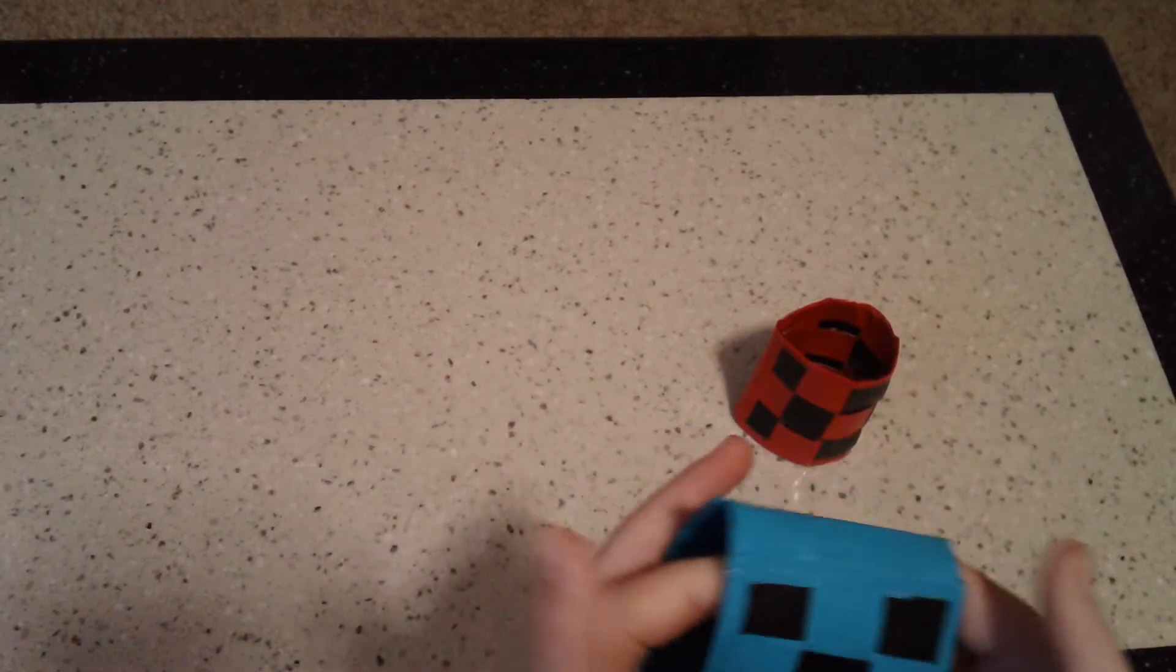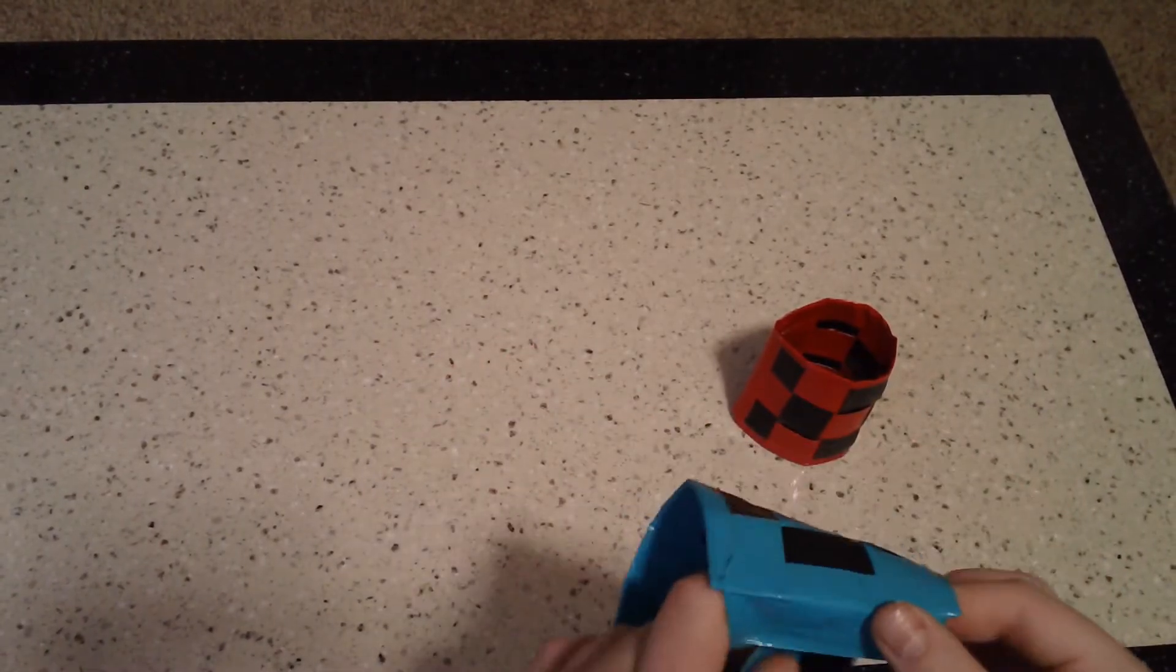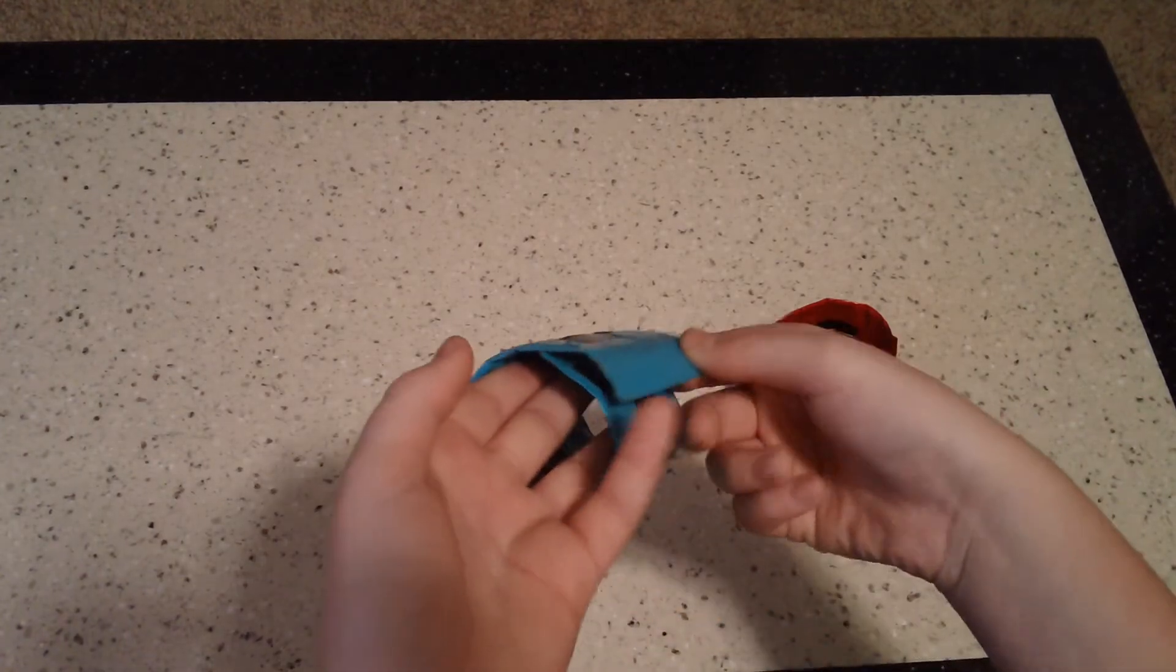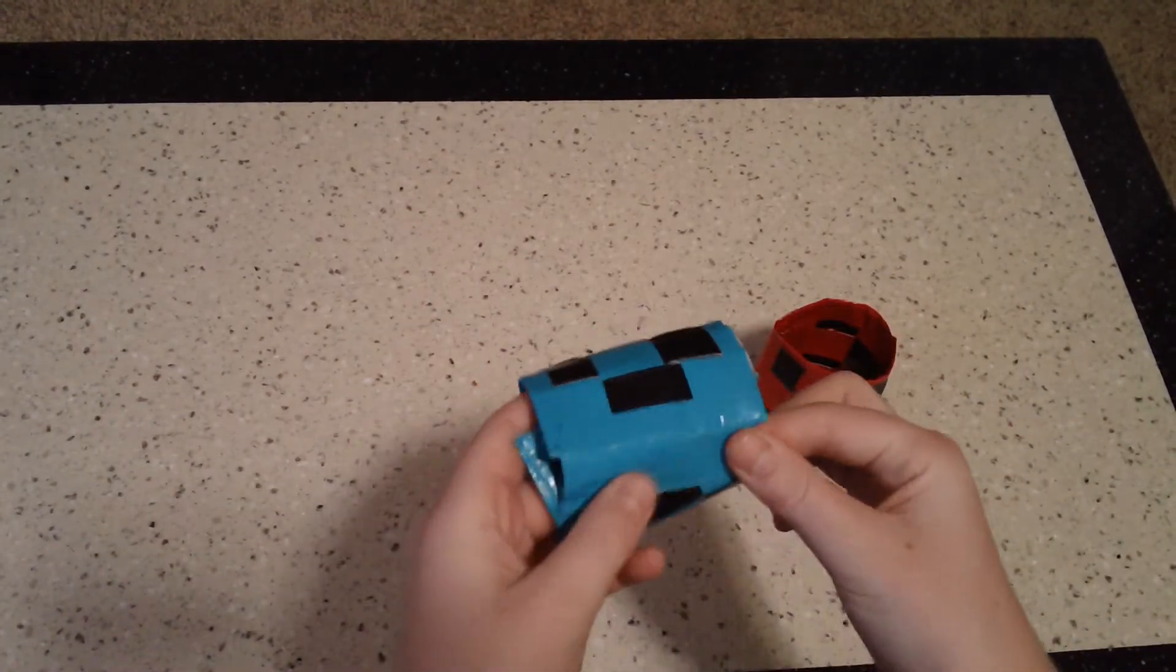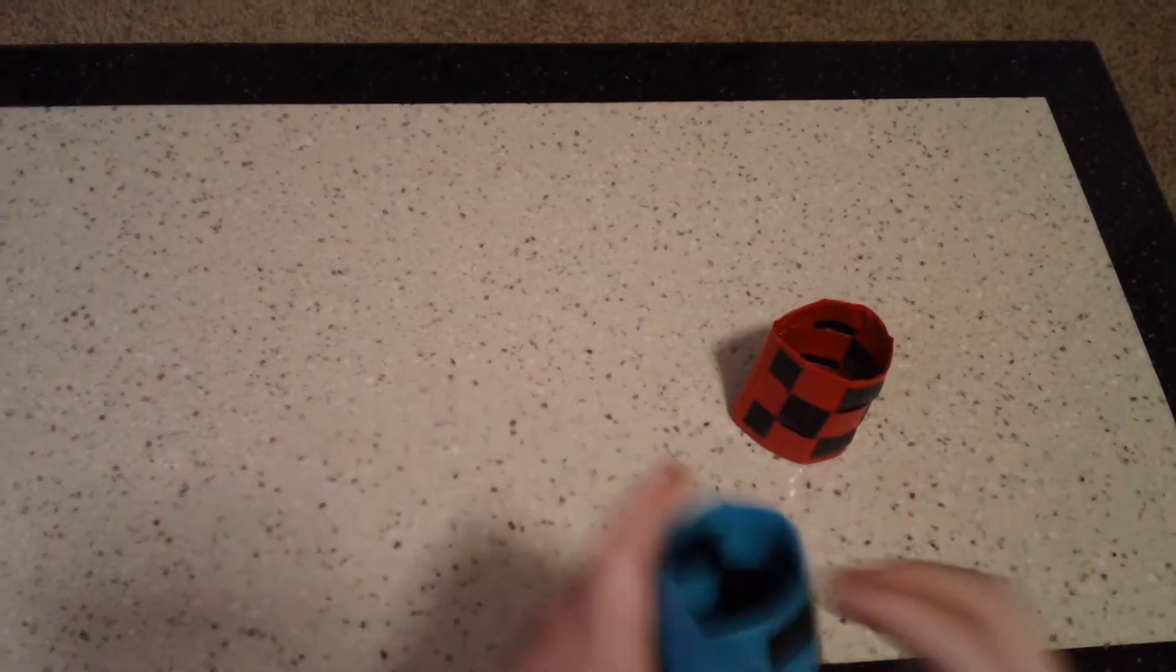You just put it on, depending on how big your wrist is. You can overlap it more. So like, you can put it way down there if you have a smaller wrist.